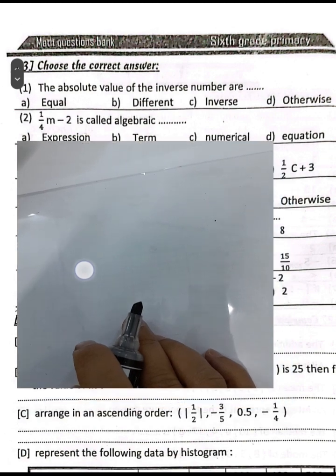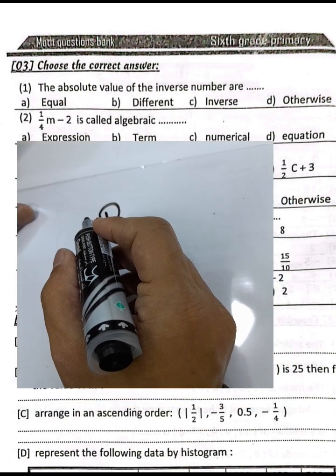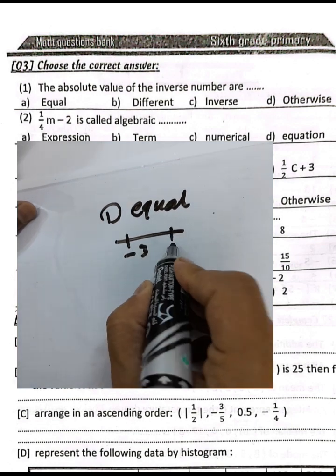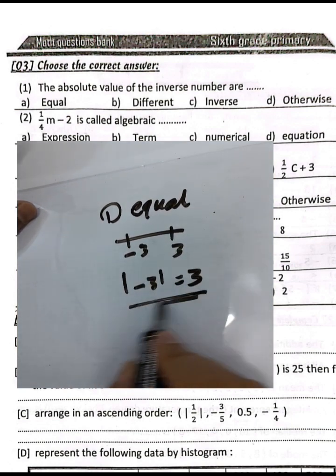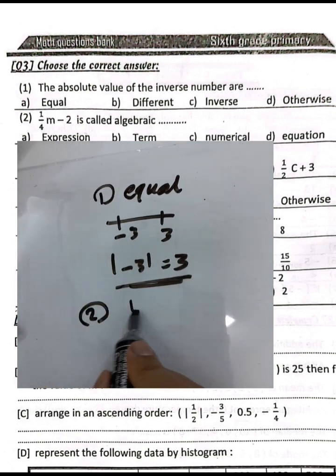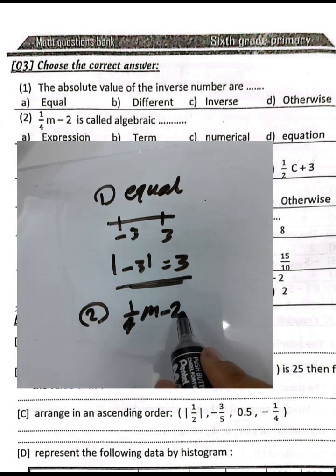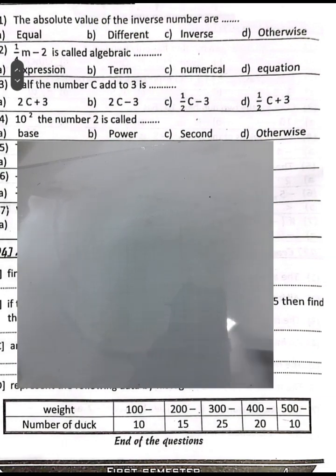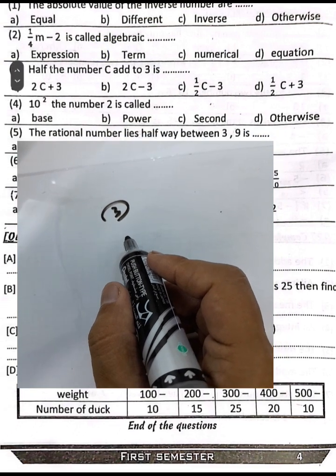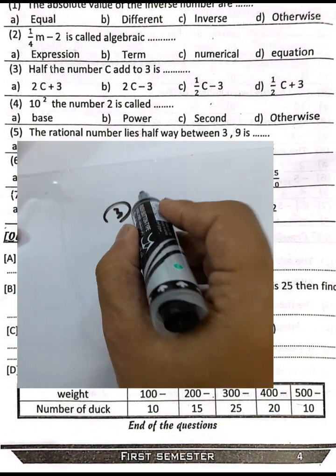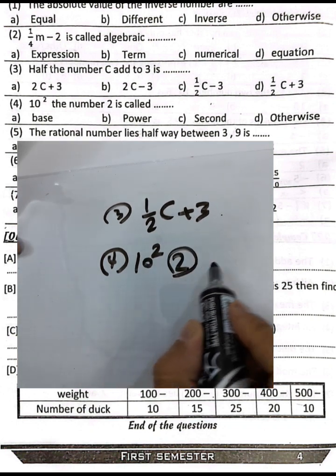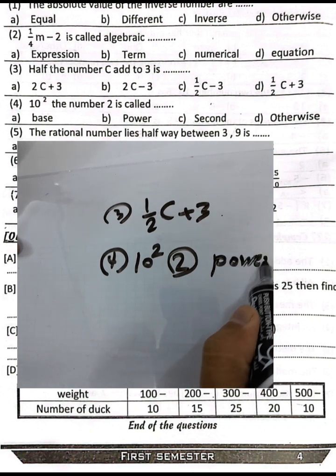Choose the correct answer. Number one: the absolute values of inverse numbers are equal. For example, the opposite of negative three is three; the absolute value of negative three equals three, so they are equal. Number two: four m minus two is called an expression. Number three: half the number c add two three. Number four: ten to the power two — the two is called the power or exponent, and ten is called the base.